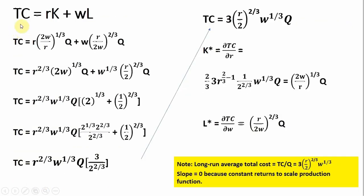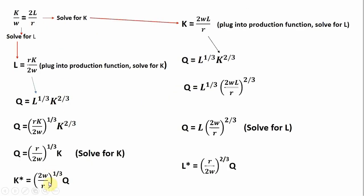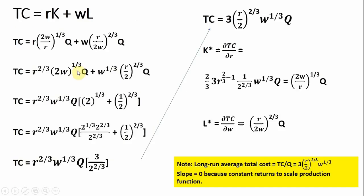Next, we take the firm's total cost — which is R times K plus W times L (price of capital times units of capital plus the wage times units of labor) — and substitute in our conditional input demands. For K we plug in the capital demand result, and for L we plug in the labor demand result. After making our substitutions, we have a somewhat complex expression that we'll now simplify.